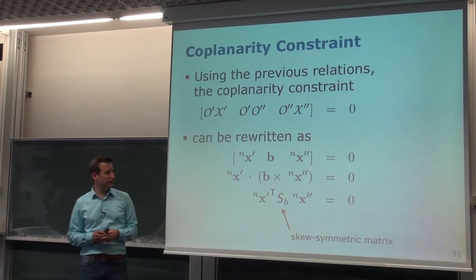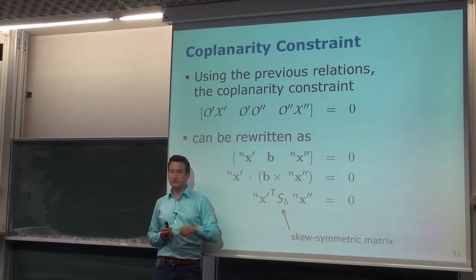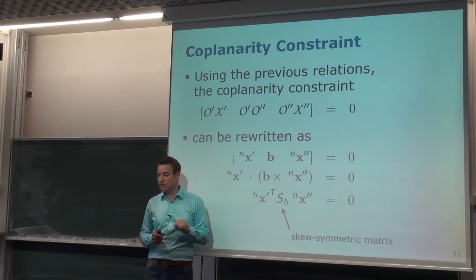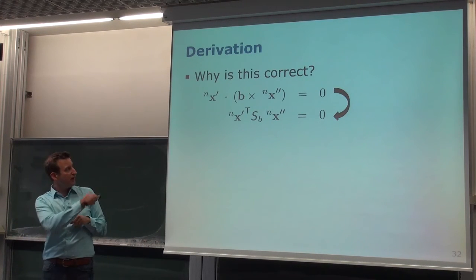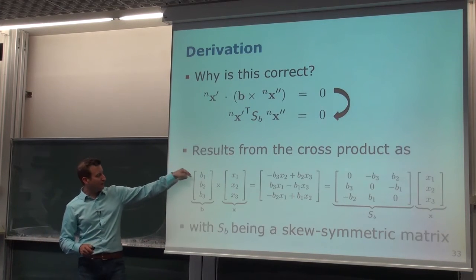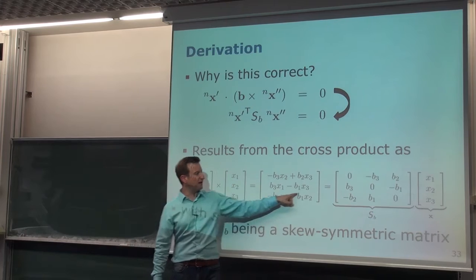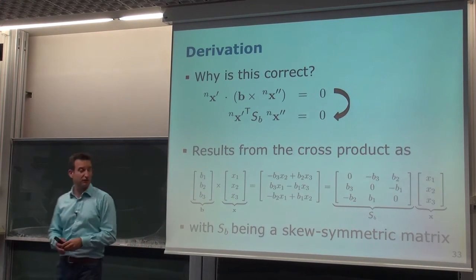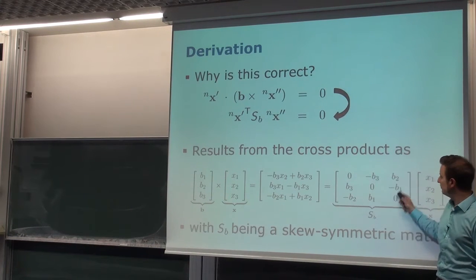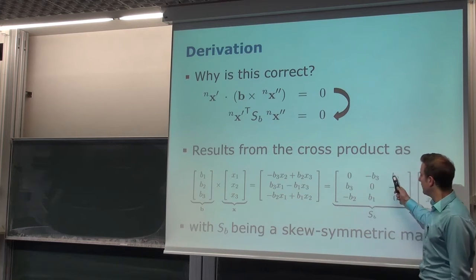Taking the definition of the scalar triple product, we have the first vector dotted with the cross product of B and the second vector — this should equal zero. We can rewrite the cross product B × X as a skew-symmetric matrix times the vector X. This follows directly from the definition of the cross product. For example, computing B1, B2, B3 cross X1, X2, X3 gives exactly the same result as multiplying the skew-symmetric matrix by X.